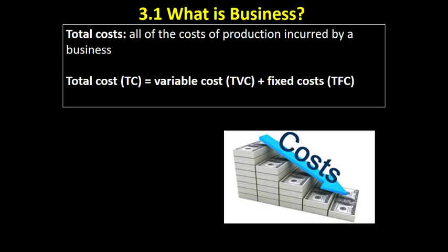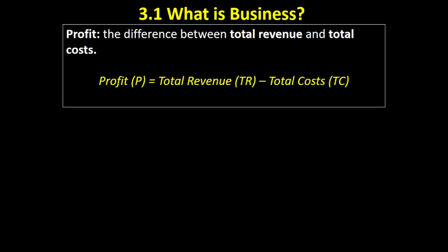Now that we know the difference between variable and fixed costs, we can work out total costs, which is the cost of production incurred by a business in earning its revenue. Total costs, often abbreviated to TC, is simply calculated by adding variable costs (or total variable costs) to fixed costs (or total fixed costs). That gives us total cost. So now, knowing total revenue — the total money gained from selling — and subtracting total costs — calculated by adding variable to fixed costs — gives us our profit.